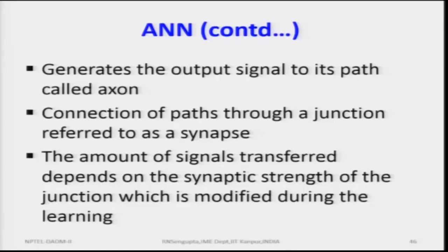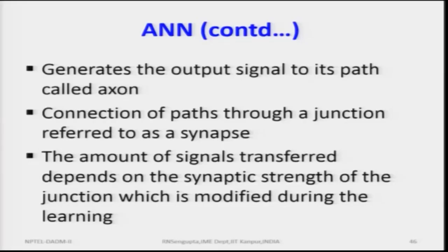The amount of signal transfer depends on the synaptic strength of the junction, which is modified during the learning process. As in the artificial immune system — where cloning, binding of white blood corpuscles with incoming pathogens, clonal selection under positive and negative selection processes all occur — they generate faster, matching is faster, affinity is faster. Similarly, this synaptic strength depends on how the information flow is: high impulse or low impulse gives you the intensity and importance of the information which should be passed from the dendrites through the synaptic space into the brain for processing.